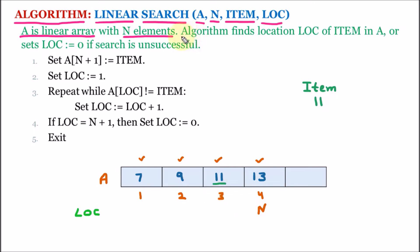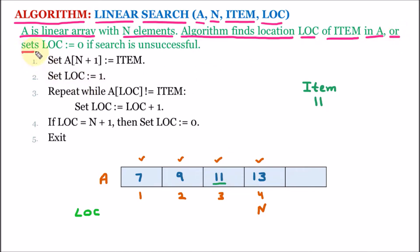Here the algorithm of linear search finds the location LOC of the item — here the item is 11 — in array A, out of which we are finding the location. We also set LOC equal to 0 if the search is unsuccessful. That means if the item is not found inside array A, the location will be returned as 0.